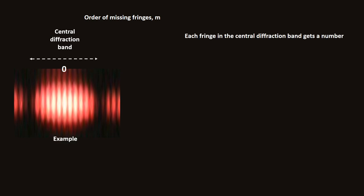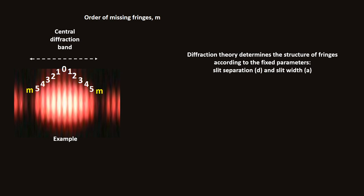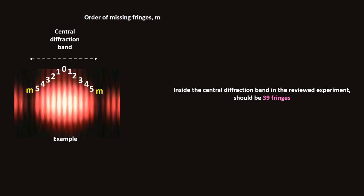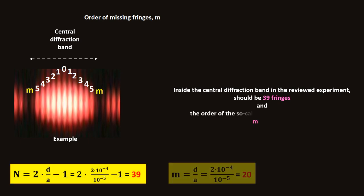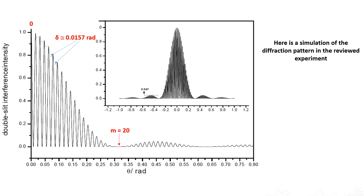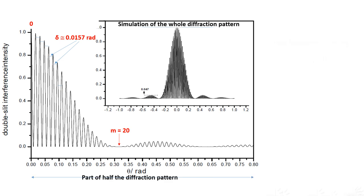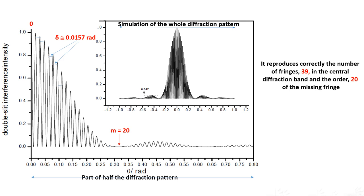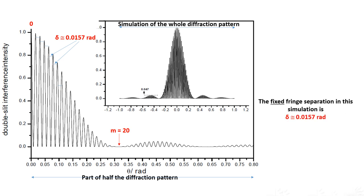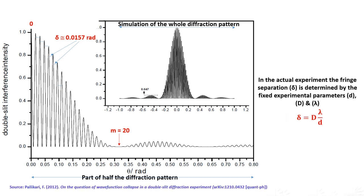Each fringe in the central diffraction band gets a number. Diffraction theory determines the structure of fringes according to the fixed double-slit parameters. Inside the central diffraction band in the reviewed experiment should be 39 fringes, and the order of the so-called missing fringes should be 20. A simulation of the diffraction pattern reproduces correctly the number of fringes in the central diffraction band — 39 — and the order of the missing fringe — 20. The fixed fringe separation delta in this simulation is 0.0157 rad. In the actual experiment, the fringe separation delta is determined by the fixed experimental parameters: small d, capital D, and lambda.